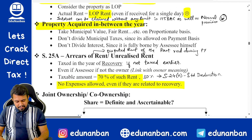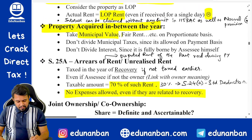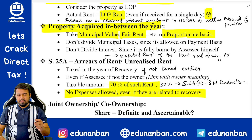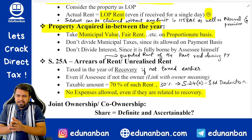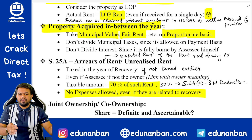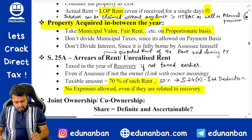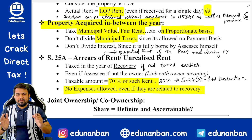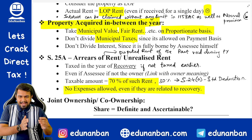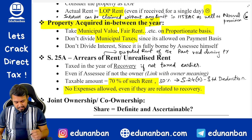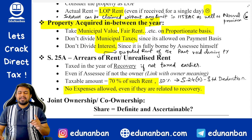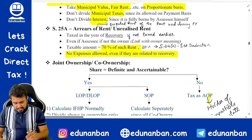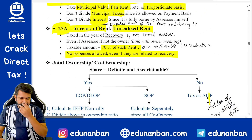If property is acquired in between the year, take municipal value, fair rent, and standard rent on a proportionate basis for the remaining months. But do not divide the municipal taxes because municipal taxes are allowed on payment basis — take the entire amount paid. Similarly, do not divide the interest because interest is fully paid by the assessee.